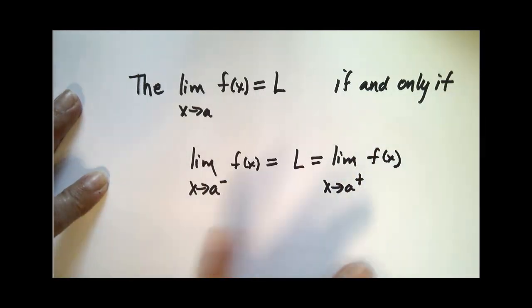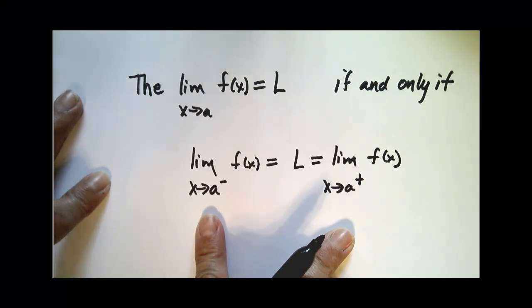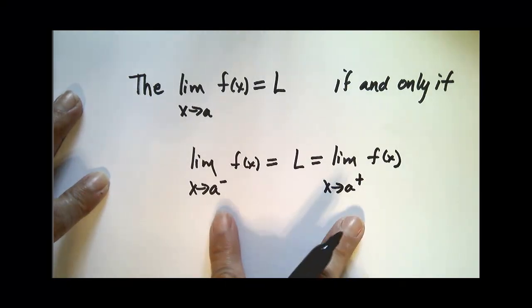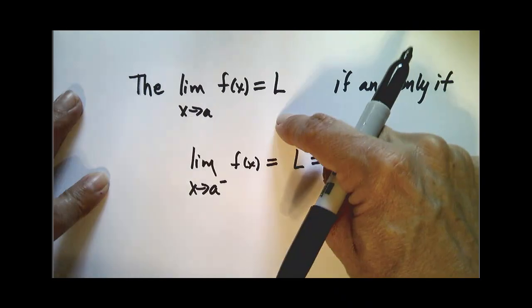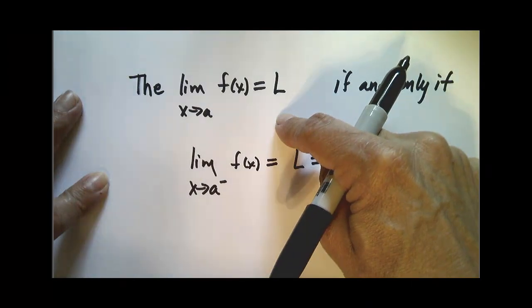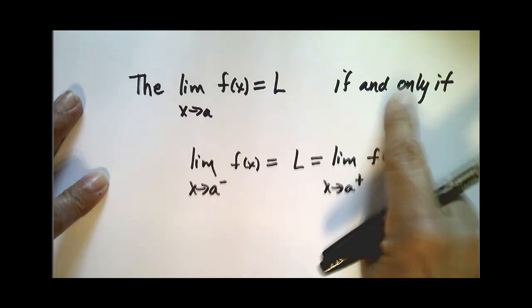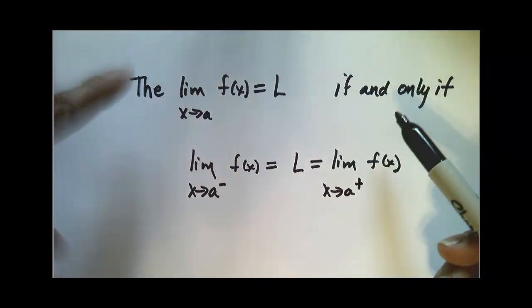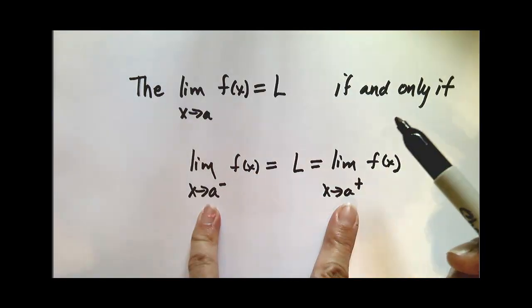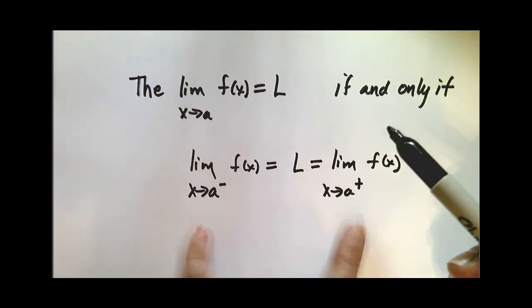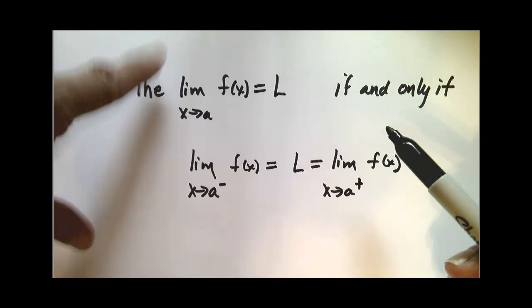In other words, my function has to be approaching the same value from both left and right as x gets closer to a, in order to say that the function has a limit of L as x approaches a. Okay, so this 'if and only if' means that if this statement is true, then this one is true, and if this statement is true, then this one is true.